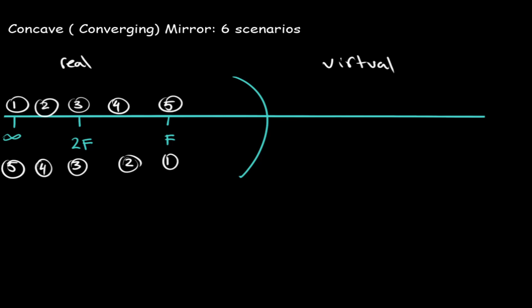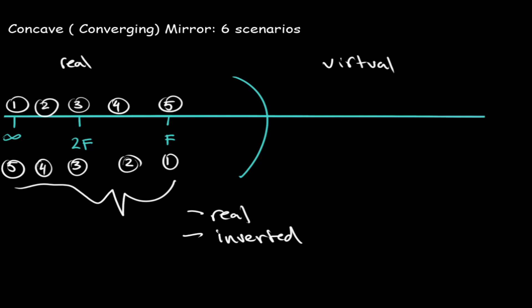For all of the images that will be formed, one through five, we need to remember that all of the images are going to be real and inverted — so they will be upside down. The next thing to memorize is the size of our images. As you slide your object closer to the mirror, the image will increasingly get larger.